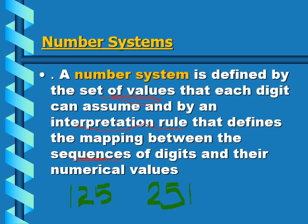But it is the set of values and how we interpret the sequence of digits that makes them different. Going back to the abacus: for 125, one is for hundreds, two is for tens, and five is for units. This is what makes these two numbers different.